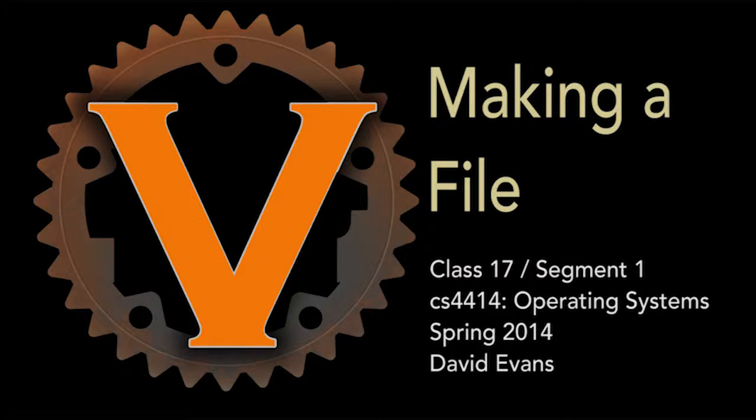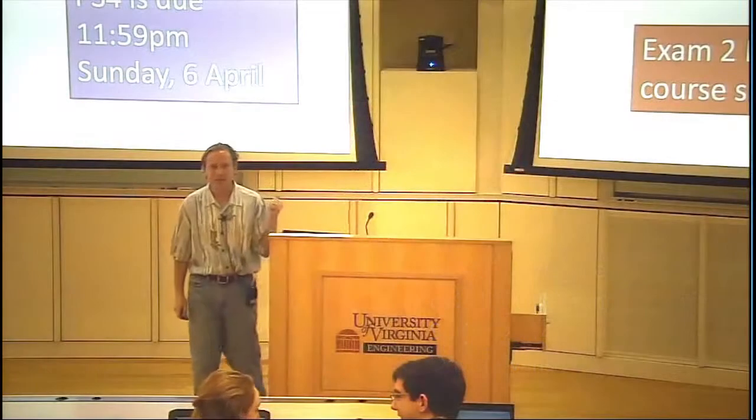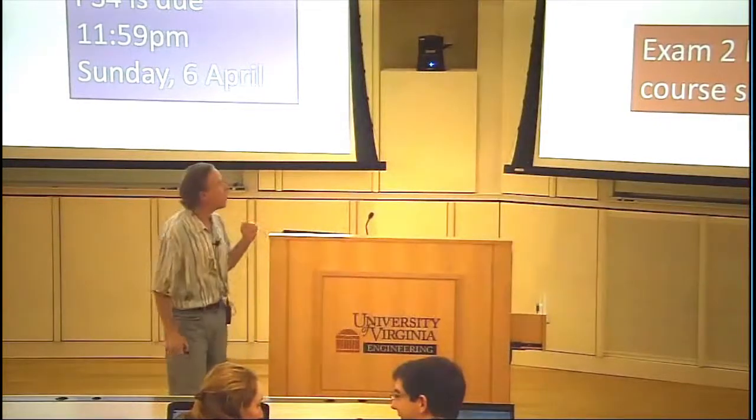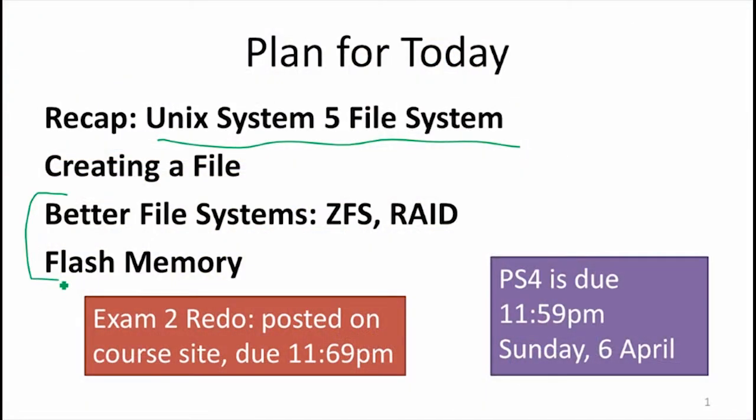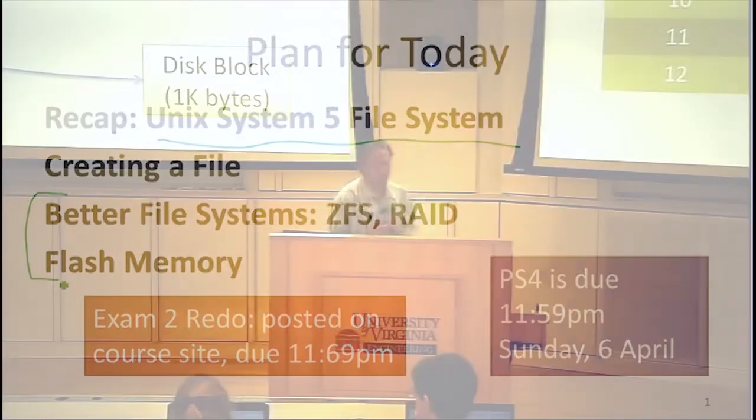We are going to recap a little bit where we got last class with the Unix System 5 file system, and then we're going to look at the kinds of things that are done in modern file systems to get better performance, better reliability, better robustness, and deal with different kinds of media.